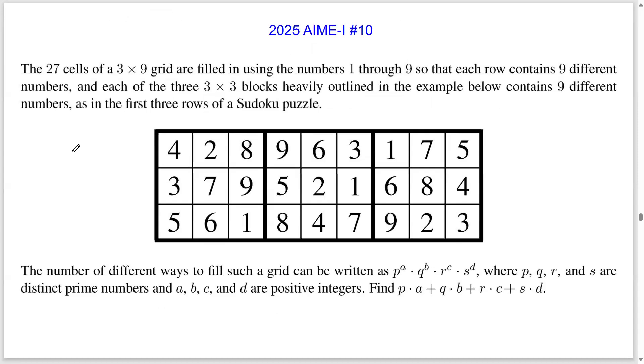The 27 cells of a 3x9 grid are filled in using the numbers 1 through 9, so that each row contains 9 different numbers. Each of the three 3x3 blocks heavily outlined in the example contains 9 different numbers, as in the first three rows of a Sudoku puzzle.